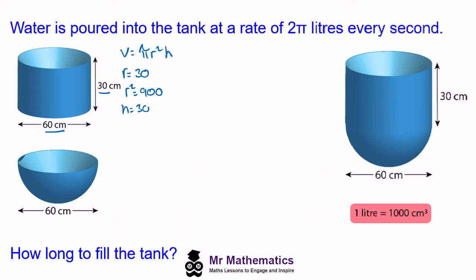So now we can substitute these two values back into our equation so our volume is π times r² which is 900 multiplied by the height of 30. So our volume is 27,000π cm³ and this is for the cylinder.